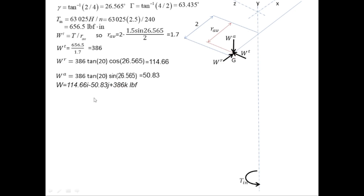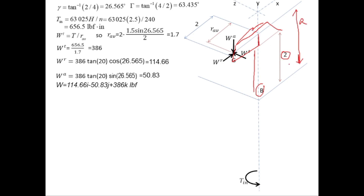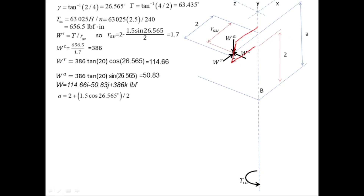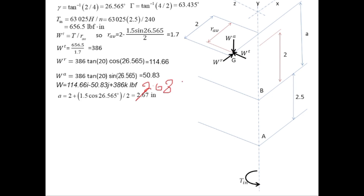The distance from the pinion to bearing B is 2 inches. The bevel gear is mounted on the shaft and a certain distance 'a' is not given. Using the right angle triangle with hypotenuse 1.5, the base = 1.5·cos(26.565°). Dividing that by 2 and adding 2 gives a = 2.646 inches.